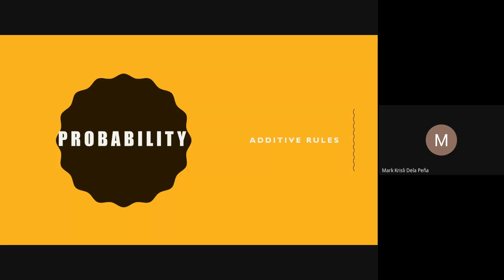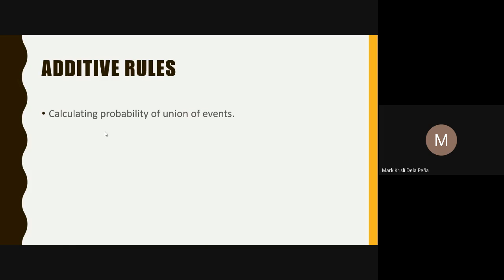Today we will be discussing one of the rules in probability — specifically the additive rules of probability. In the additive rules, we calculate the probability of the union of events. If you have two or more events, we can get the combined probability by finding the probability of their union.